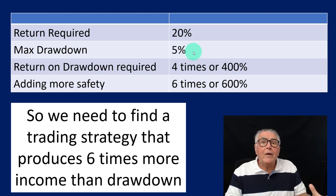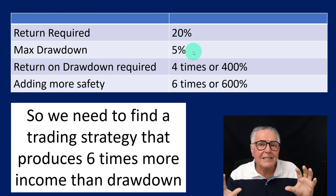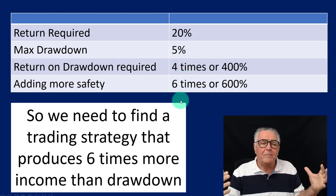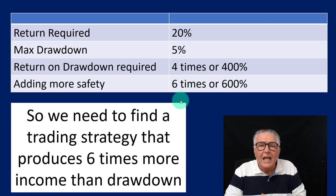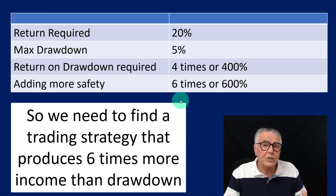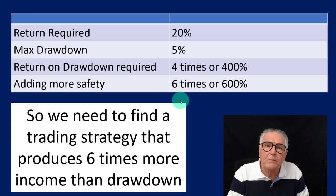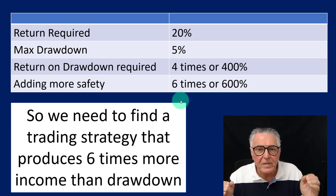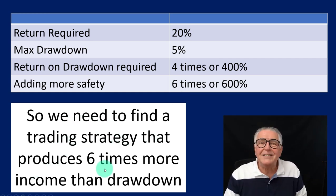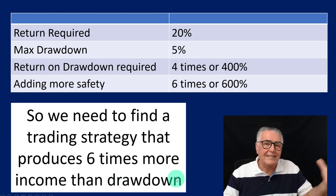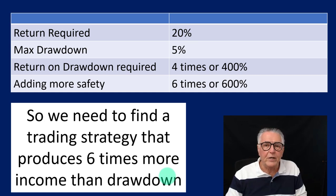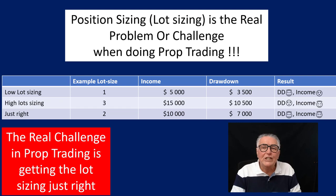Rather than going for four times, I say aim for six times — add more safety so your income is six times your drawdown. You don't want to just barely pass; you want the ability to trade properly for the rest of your life. So the trick is simply to find a trading strategy that produces six times more income than drawdown. There are hundreds of such strategies, and I'll go through them in the next videos.